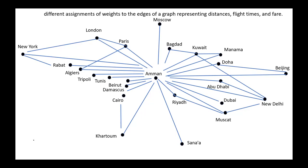If our problem involves flight times, then we can assign flight times to edges. For example, Amman–Kuwait 3 hours 10 minutes, Amman–Rabat 5 hours 5 minutes, etc.